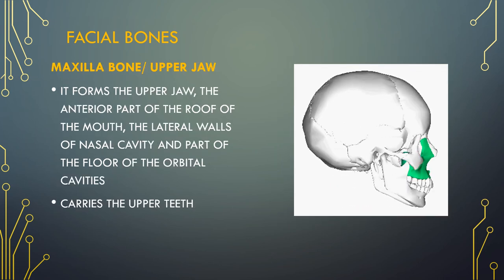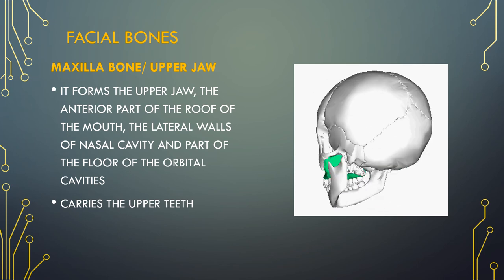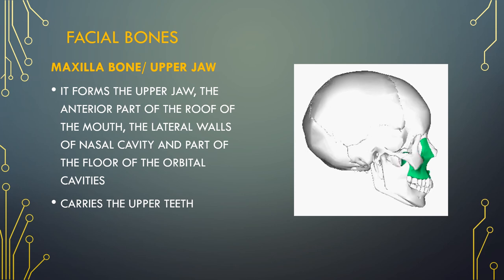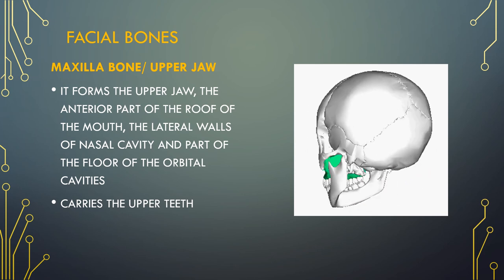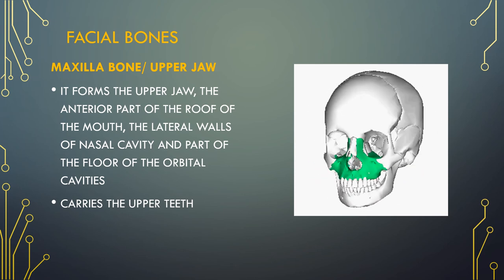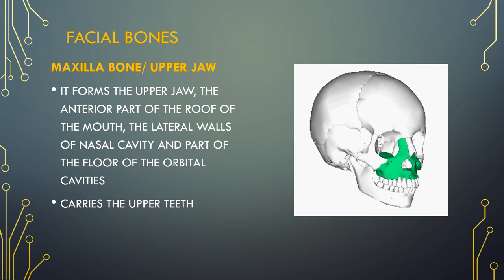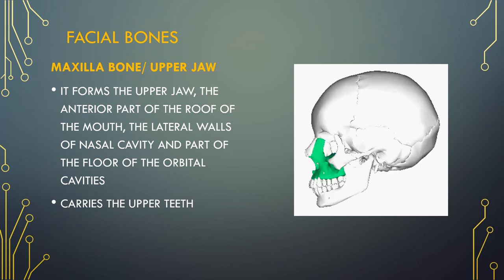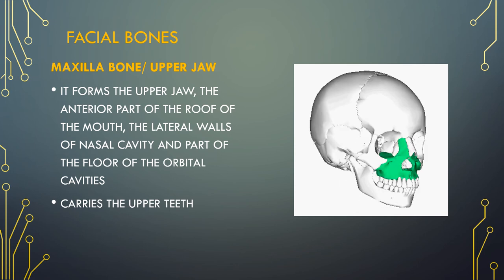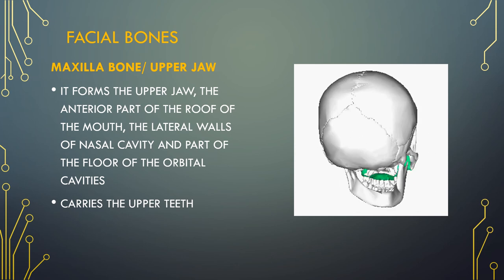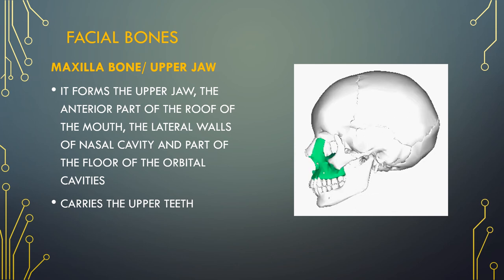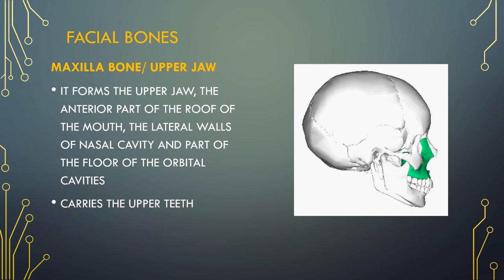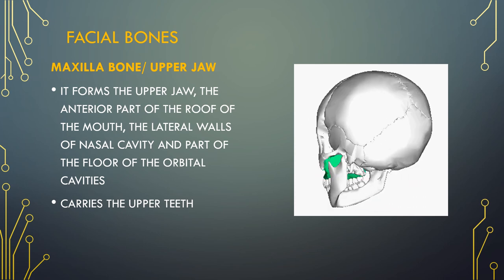The facial skeleton supports the soft tissues of the face. It consists of 14 bones and is fused to house the orbits. The maxilla has many functions. It provides critical bone structure to the skull and defines the face. Since it houses the upper teeth and forms a portion of the jaw, the maxilla is necessary for the process of mastication, which is chewing, and speaking.